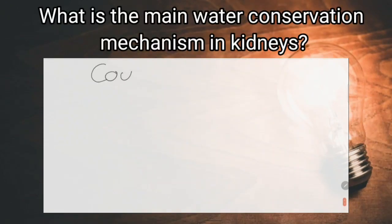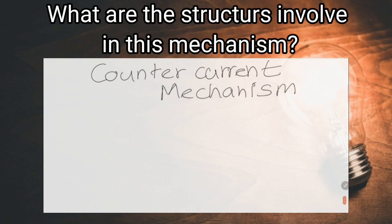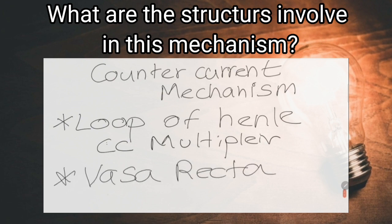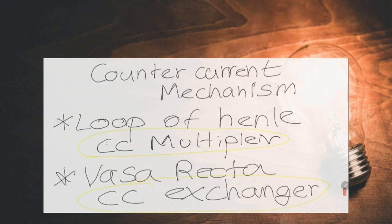What is the main water conservation mechanism in the kidney? The countercurrent mechanism. What are the structures involved? The loop of Henle acts as a countercurrent multiplier, which produces a hyperosmolar medullary interstitium. The vasa recta acts as a countercurrent exchanger, which maintains the medullary hyperosmolarity.